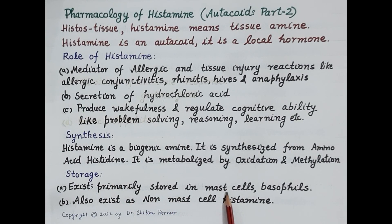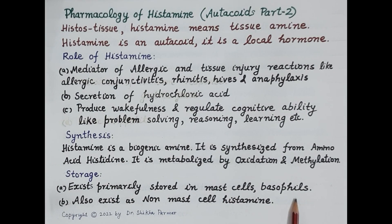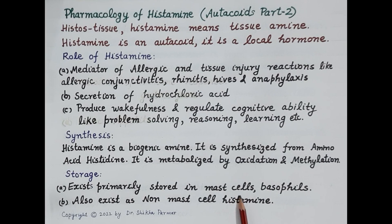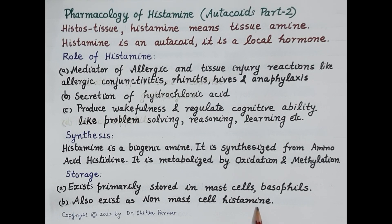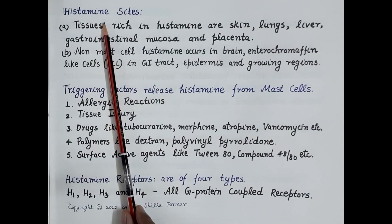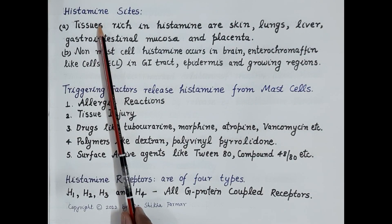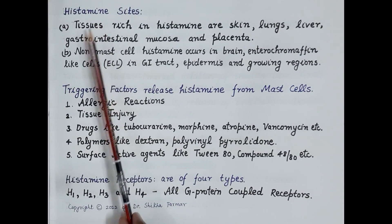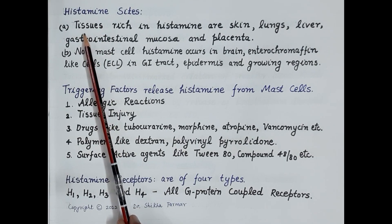The majority of histamine remains stored in mast cells. Histamine also exists as non-mast cell histamine — that is, histamine not stored in mast cells. Now let's understand the sites in the body where histamine is found.